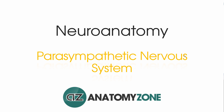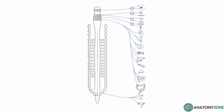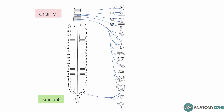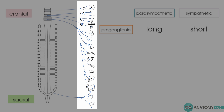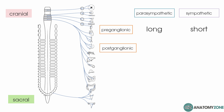Hi, this is Peter from AnatomyZone and in this tutorial we're going to take a look at the anatomy of the parasympathetic nervous system. The parasympathetic nervous system has cranial and sacral components. To recap from previous tutorials, the preganglionic fibres are longer than those of the sympathetic nervous system because the ganglia lie near or within the target organs, meaning the postganglionic fibres are shorter. We'll look at the cranial outflow first, then the sacral outflow.